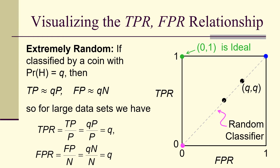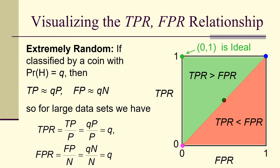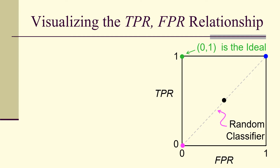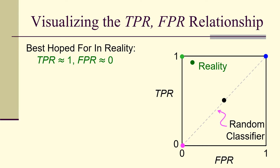Any classifier lying on that diagonal line is called a random classifier. Above the line, the true positive rate is greater than the false positive rate; below it, the true positive rate is less than the false positive rate. The random classifier corresponds to the line where true positive rate equals false positive rate, and the ideal is the corner at (0, 1) — though in reality we'll probably only ever get very close to that corner.